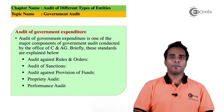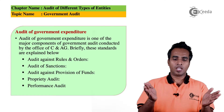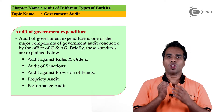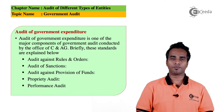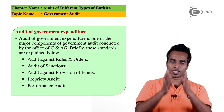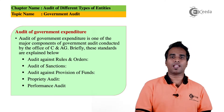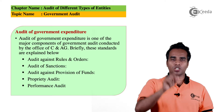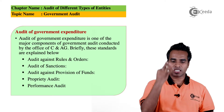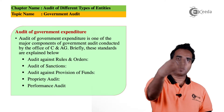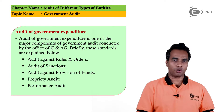First point: who will conduct the Audit of Government Expenditure — that is one of the major components. It is conducted by the Office of CAG. The points are: first, Audit against the Rules and Order; second, Audit of Sanctions; third, Audit against the Provision of Funds; fourth, Proprietary Audit; fifth, Performance Audit.